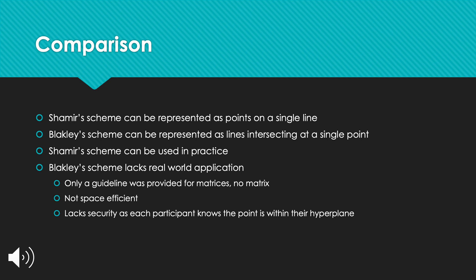We will now review a brief comparison of the two schemes. Shamir's scheme can be represented as points on a single line, while Blakely's scheme is represented as lines intersecting at a single point. Shamir's scheme is based on the idea that two points define a line, three define a parabola, and four define a cubic curve. Blakely's scheme uses the idea that two non-parallel lines intersect at one point, and three non-parallel planes intersect at a specific point. Shamir's scheme is most commonly used in practice, whereas Blakely's scheme lacks real-world applications — the original presentation offered only a guideline for matrices without providing a concrete one. Blakely's scheme is also not space-efficient and lacks security, as each participant knows the secret point lies within their hyperplane.